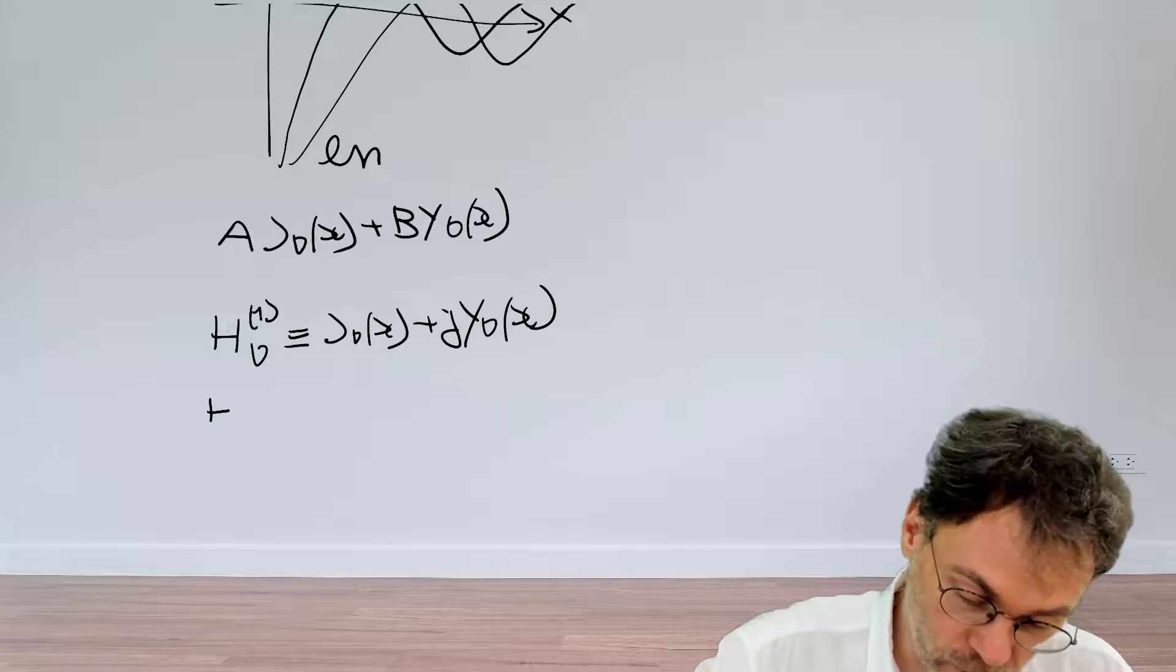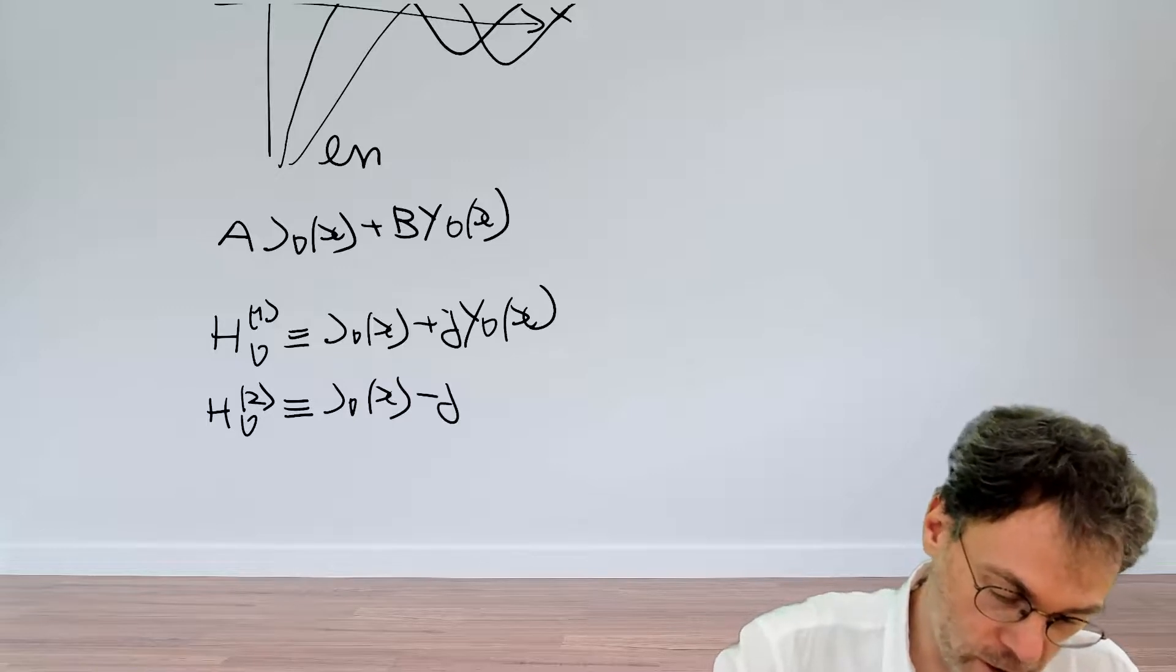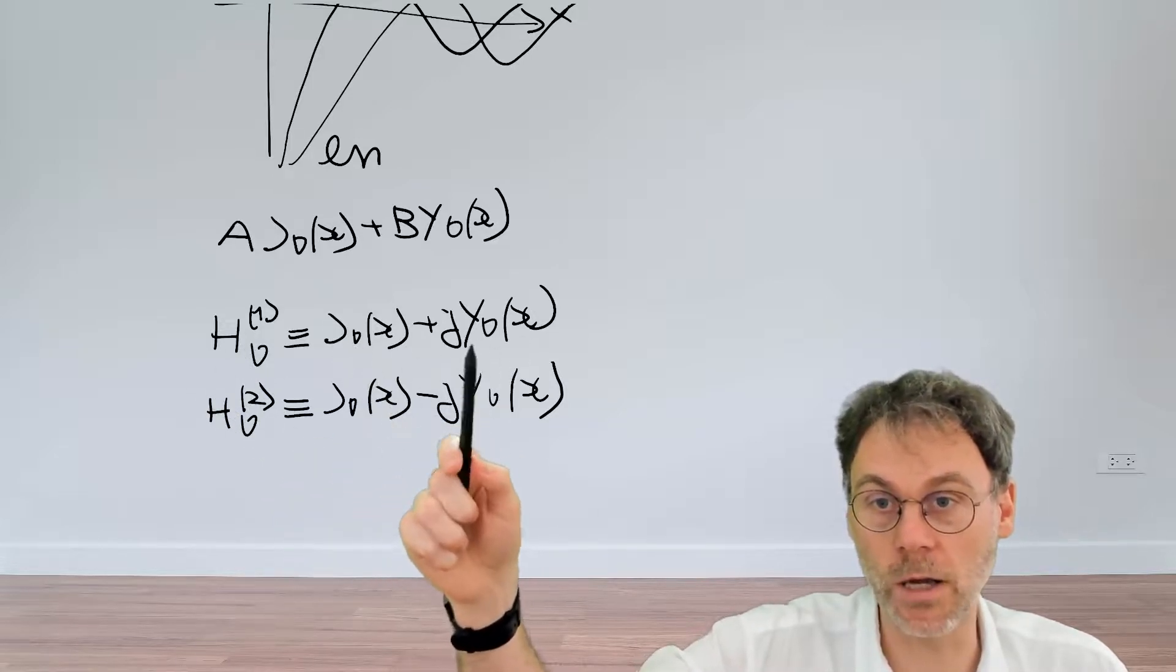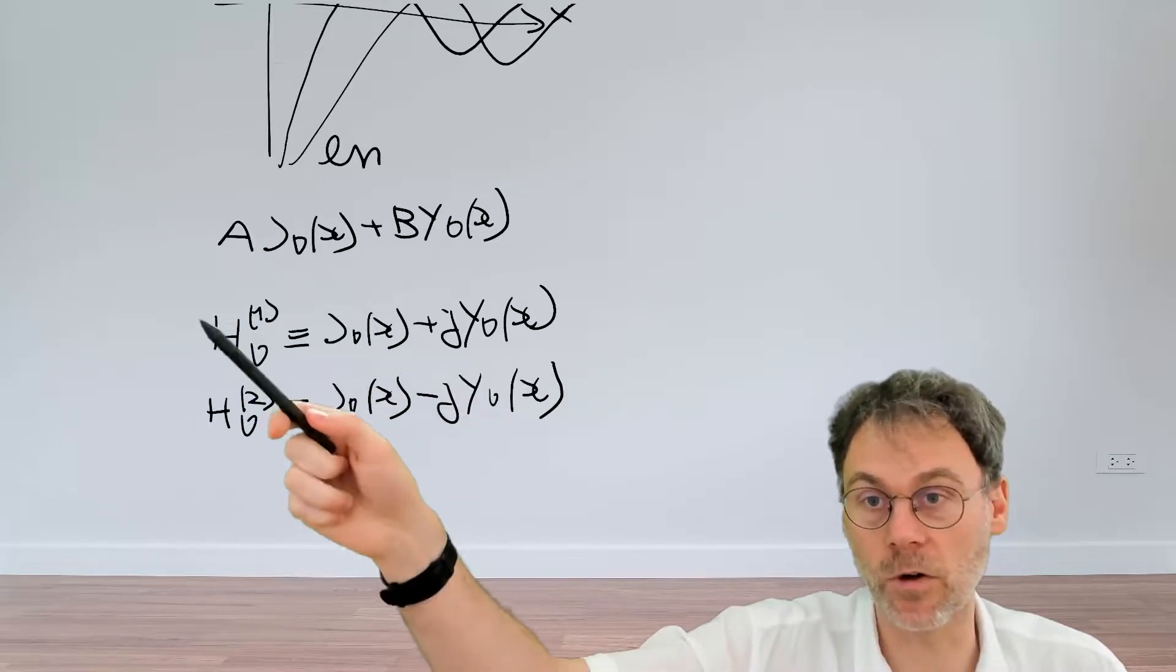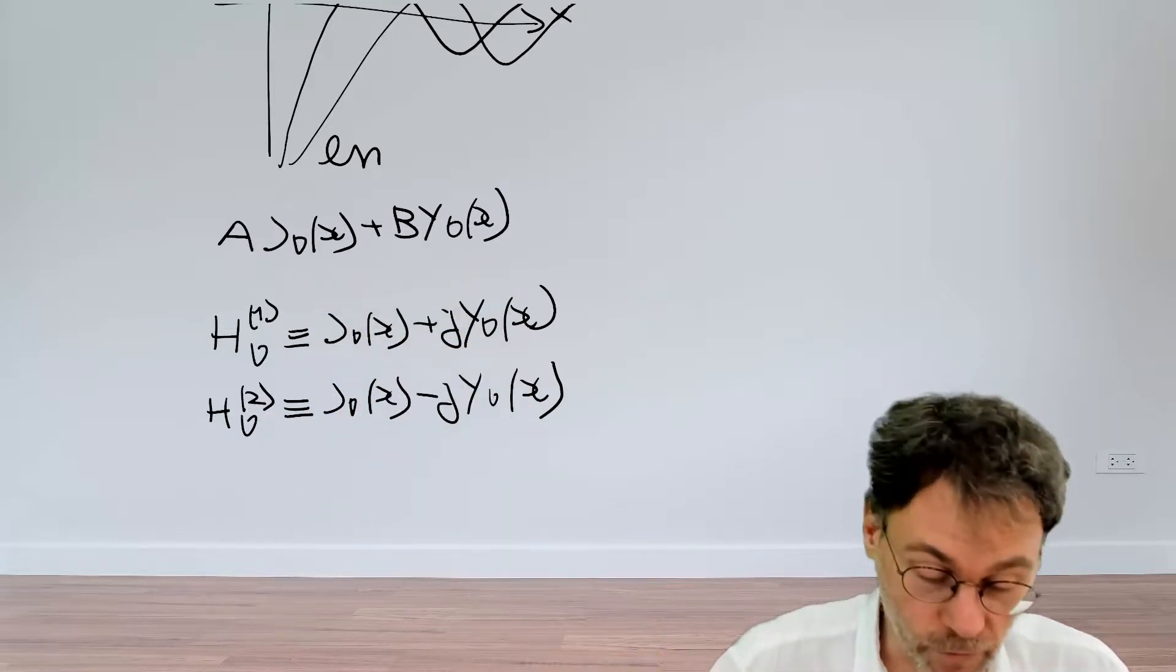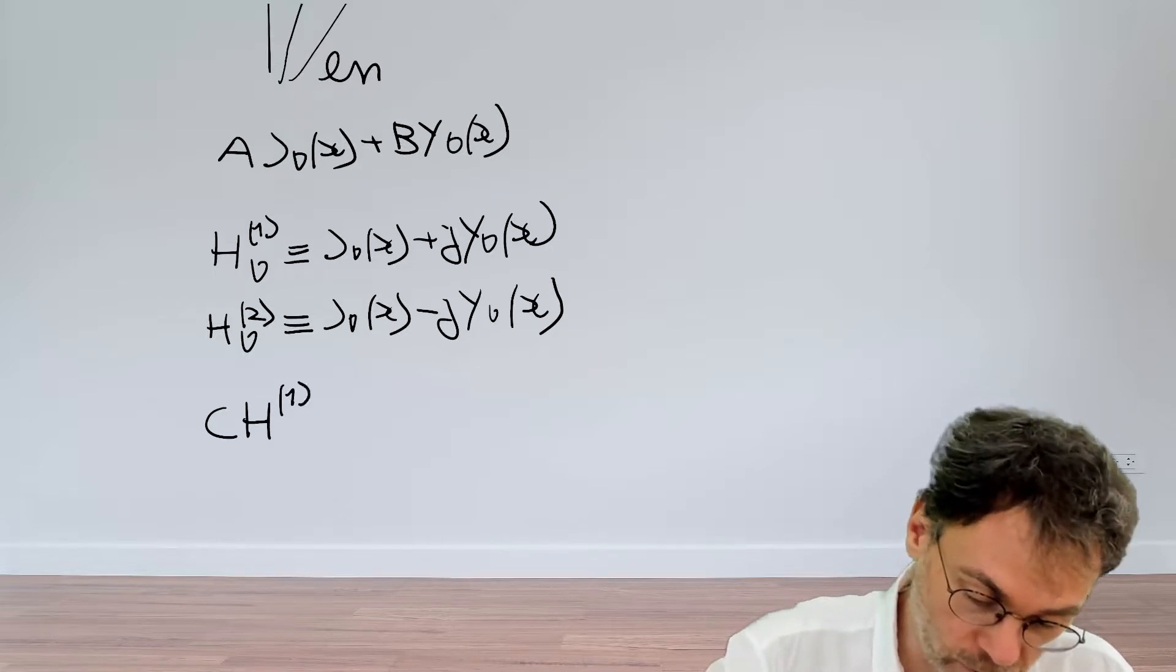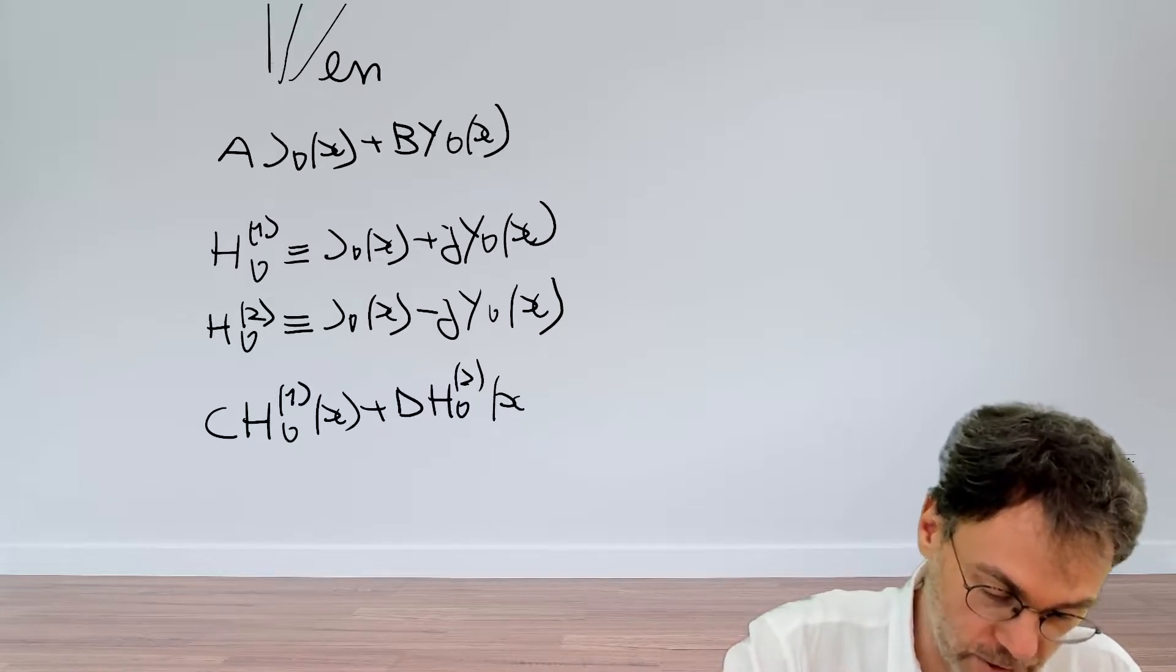And then if we introduce a Hankel function of the second kind, which is equivalent but with a minus sign over here, then we can basically express the H's as a function of J's and Y's, but we can also express, just by solving this linear system here, we can also express the J's and the Y's as a function of H_1 and H_2. And if we substitute that in here, we can also say that a general form of the solution to Bessel's differential equation can be written as the following linear combination as C Hankel function of the first kind plus D Hankel function of the second kind.